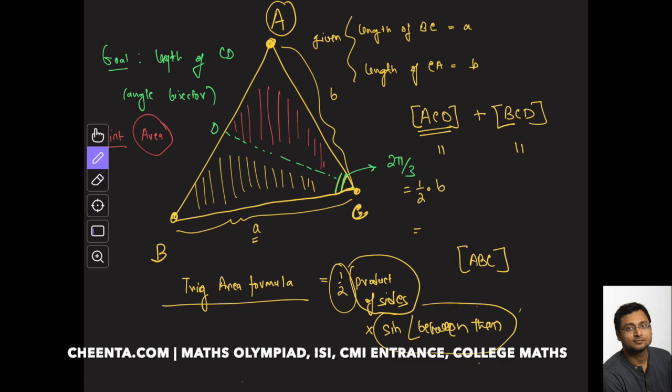In this particular problem, if I look at triangle ACD's area, I'll use half times AC, which is small b, times CD, times sine of half of this angle because this is an angle bisector. So this is half of angle 2π by 3, which is 2π by 6. So sine of angle 2π by 6.